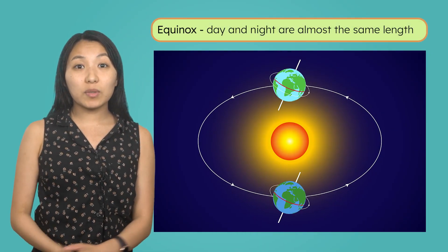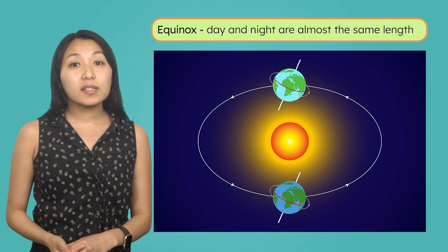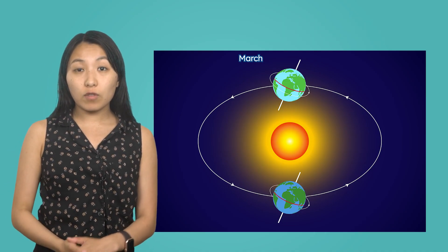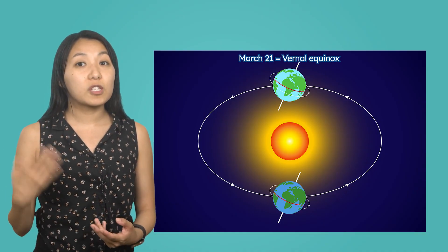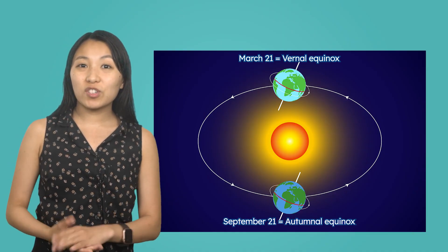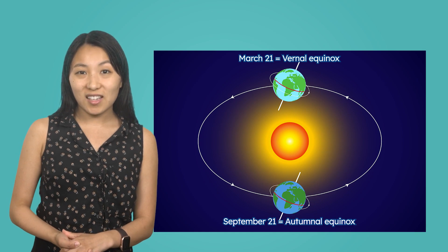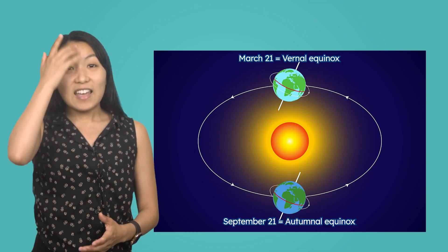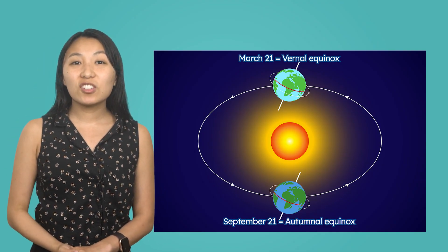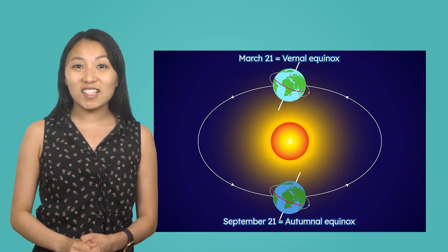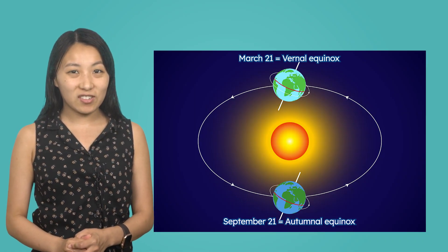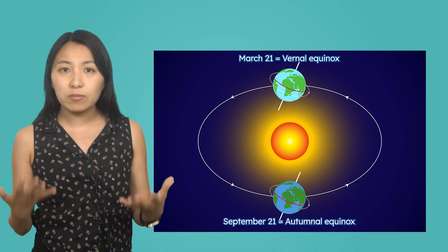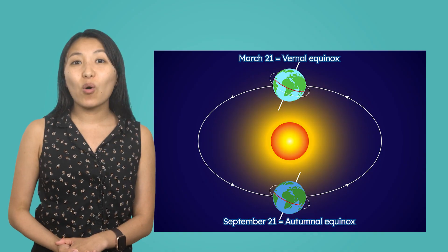Equinoxes are the times of year when day and night are nearly equal in length, because the sun is positioned directly above the equator. In the Northern Hemisphere, these occur around March 21st, which is the vernal or spring equinox, and September 21st, which is the autumnal equinox. In the Southern Hemisphere, these seasons are opposite those of the Northern Hemisphere. Equinoxes happen because Earth's tilt positions the sun directly over the equator, spreading sunlight equally between hemispheres — and this is also why equinoxes do not have such extreme changes in daylight and night hours at the poles or the equator.